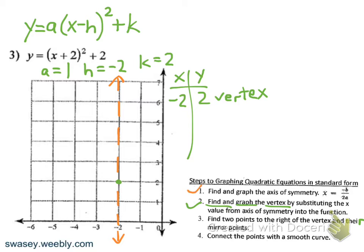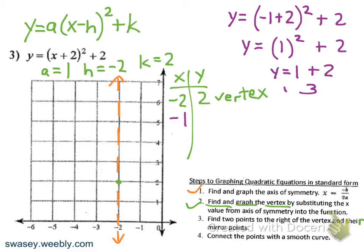Now we'll put in some x values to the right of the vertex, like negative 1. We're going back to the original equation. Anywhere we see an x, put negative 1. Negative 1 plus 2 is 1, 1 squared is 1, and 1 plus 2 is 3. So we have a point at negative 1, 3.